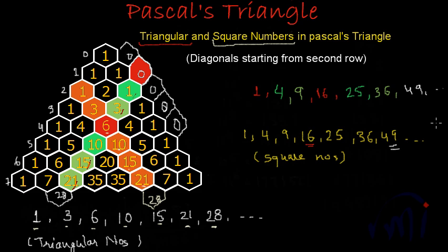This is how we find the square numbers. We have found the triangular numbers and the square numbers in Pascal's Triangle. Triangular numbers can be directly found in the diagonal starting from the second row. Square numbers are also found using the second-row diagonal, but by adding two consecutive numbers of the diagonal each time — first adding the element to the zero outside, then adding successive pairs.